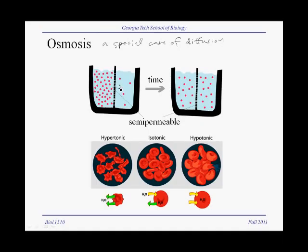If the membrane is permeable to the solute molecules, some of these solute molecules will cross the membrane from left to right, and some will cross from right to left. But since there are many more molecules on the left side, there will be more molecules going from left to right. Over time, the concentrations will equalize until the number of molecules going from left to right exactly equals those going from right to left — at that point we have attained equilibrium. At equilibrium it's not static; molecules are still crossing the membrane, but the rate is equal in both directions.